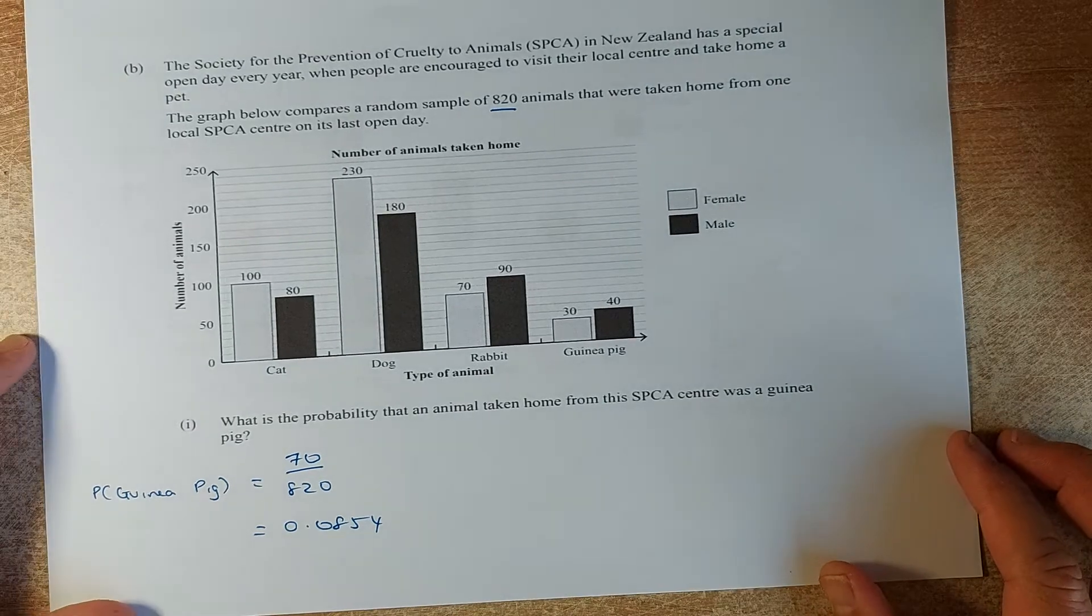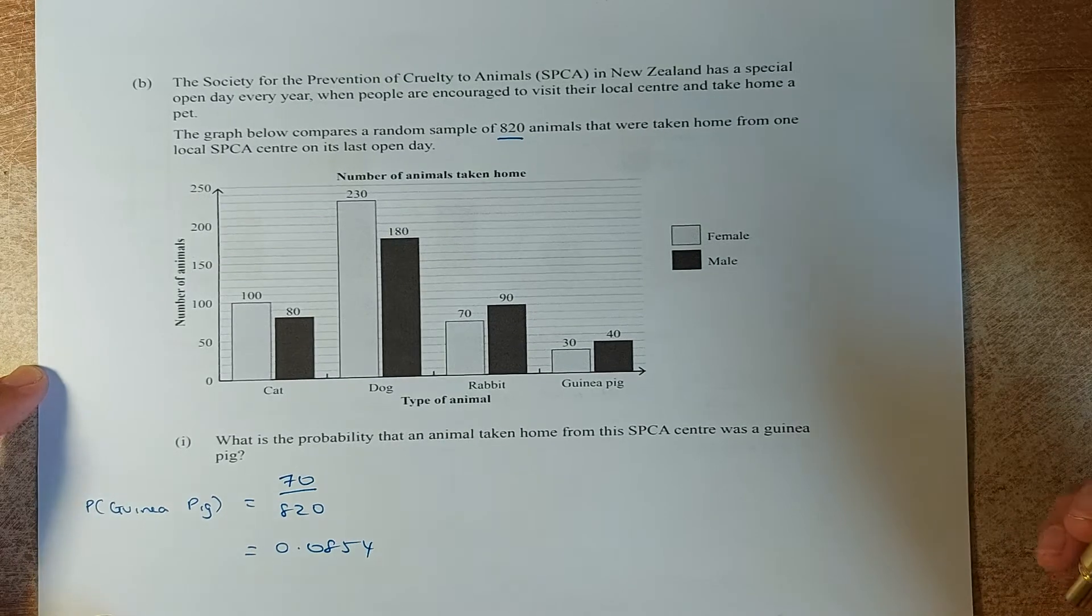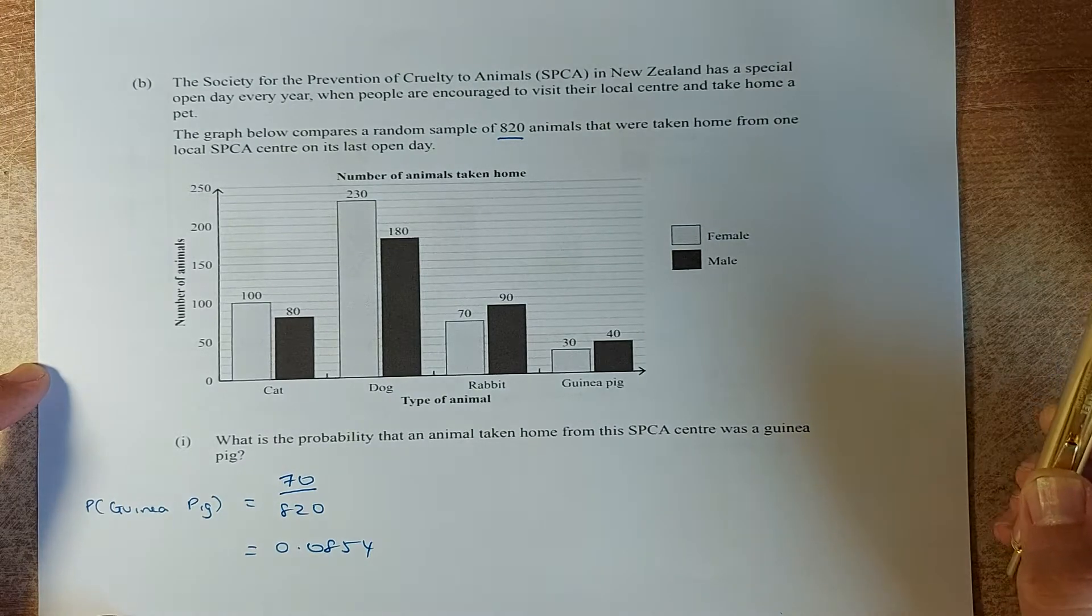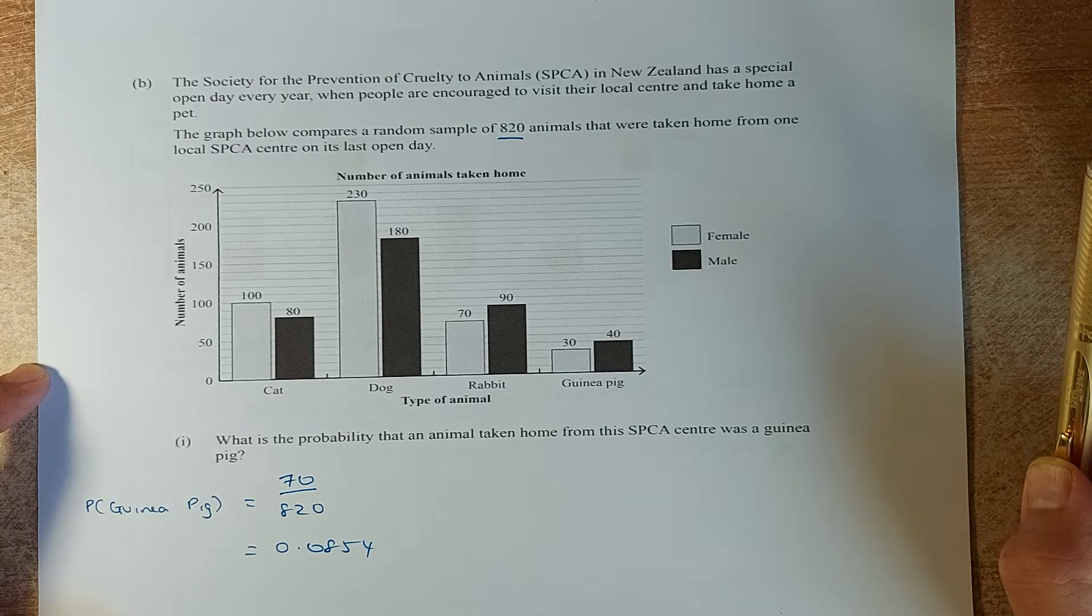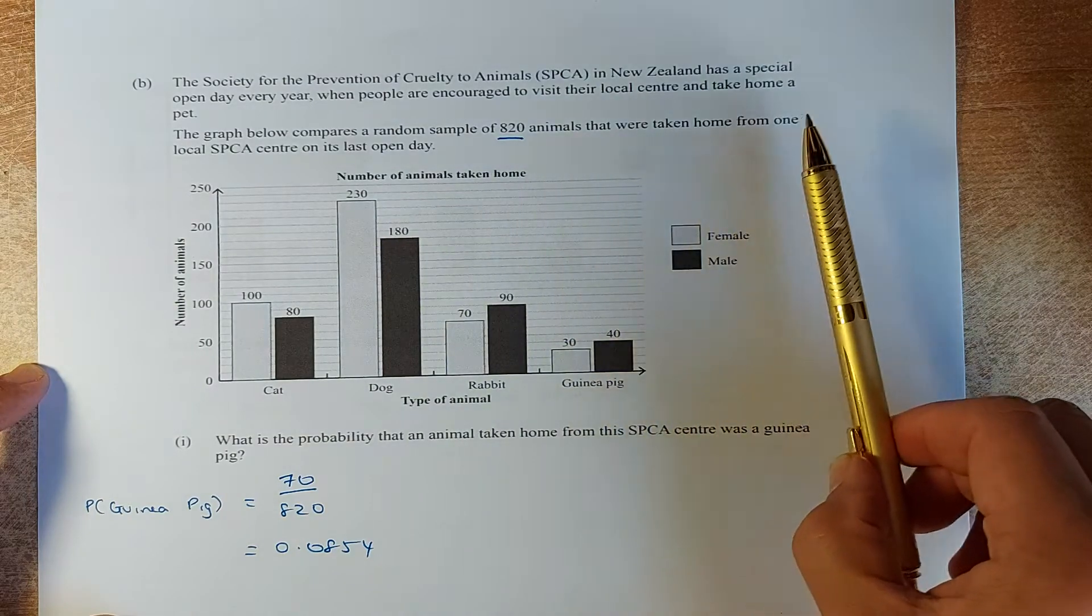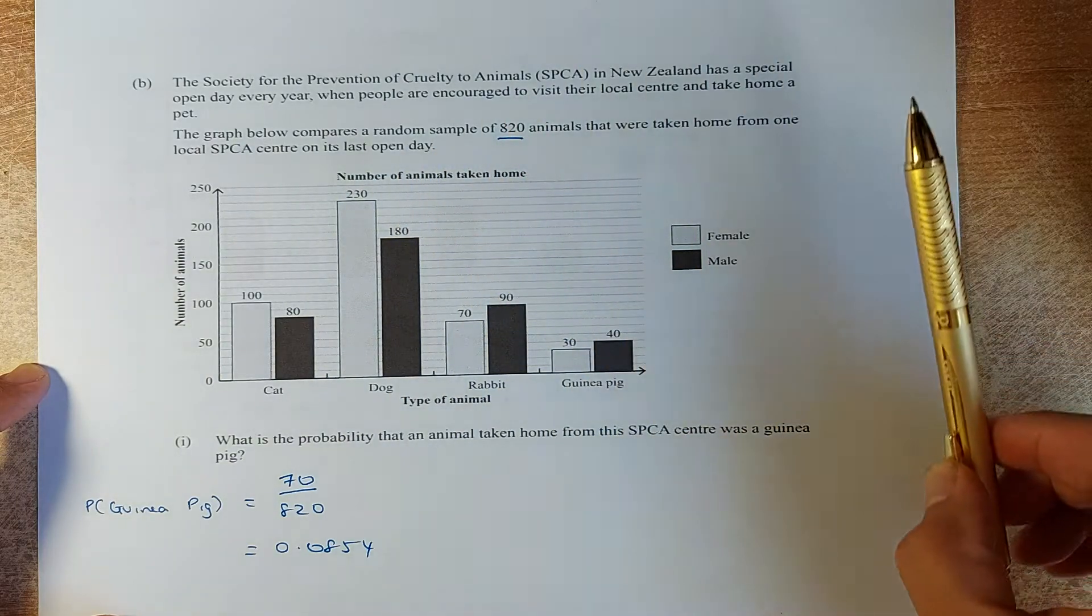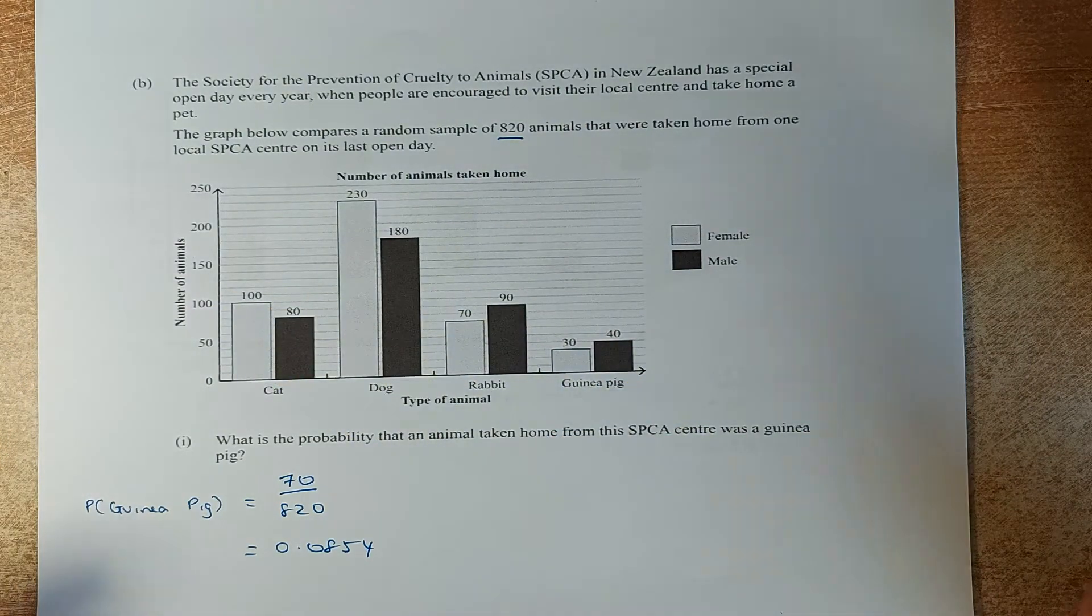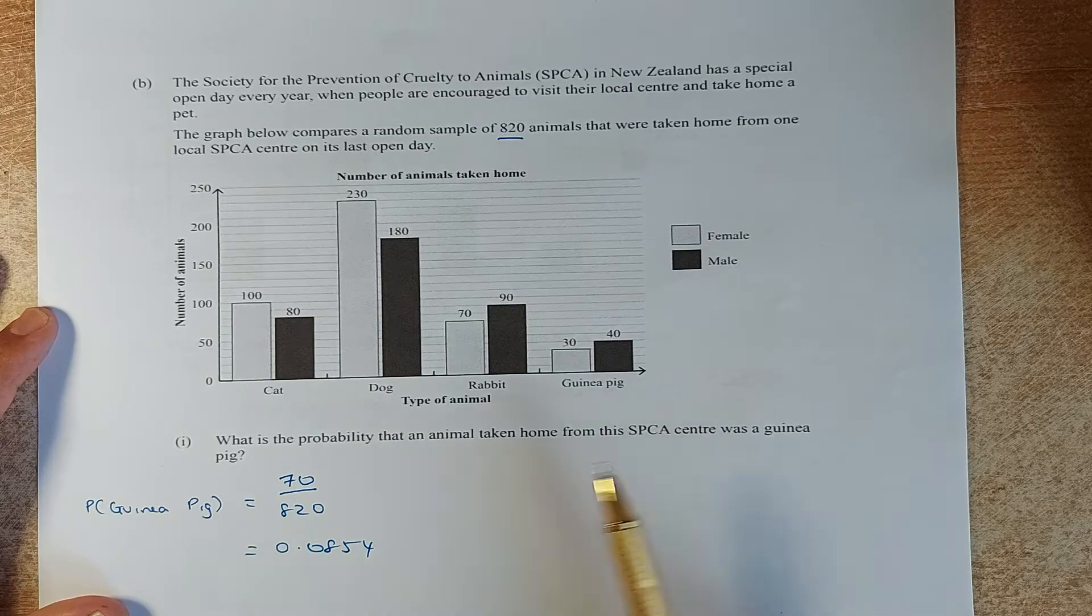Let's go for the next type of question. This time, it's going to look at a bar graph. The question says, The Society for Prevention of Cruelty to Animals, or SPCA, in New Zealand has a special open day every year where people are encouraged to visit their local centre and take home a pet. The graph shows a total of 820 animals that were taken from one local SPCA on its last open day. The light-coloured is the female, and the dark-coloured is the male.